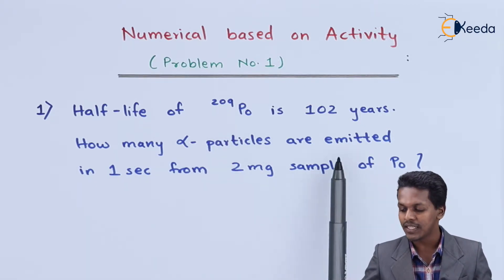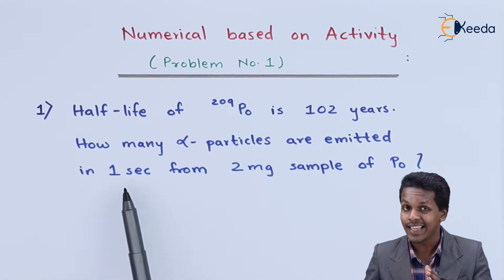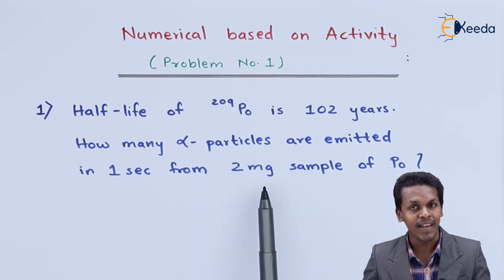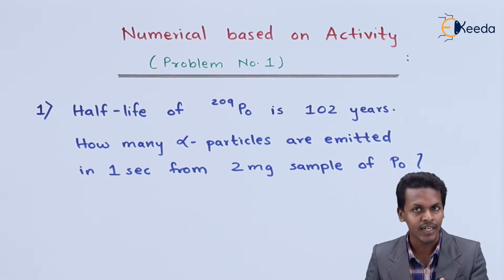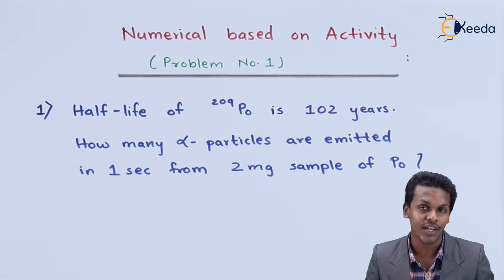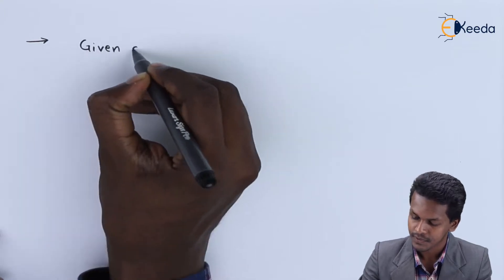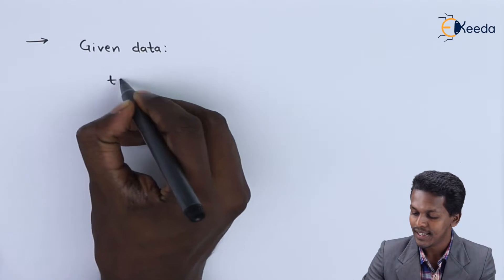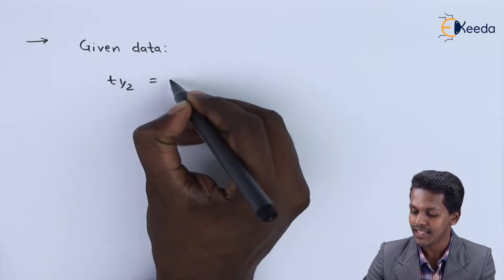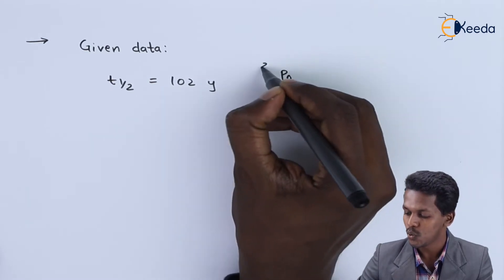The duration in which the disintegration should occur is one second, and the sample has a weight of two milligrams. Let us now list the given data and identify which formula to use to find the activity of this radio element. The given data: half-life T½ = 102 years for polonium-209.